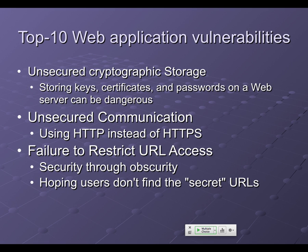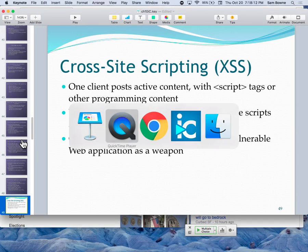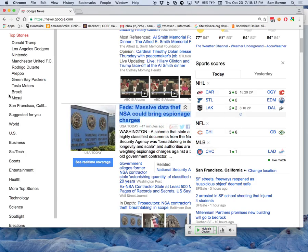There's a lot of security through obscurity where certain URLs go to places you aren't allowed, and instead of having a real authentication structure, they just hope nobody finds the secret URL. Cross-site scripting is one of the big attacks — let me show you some examples.